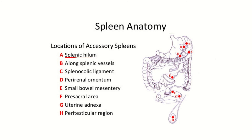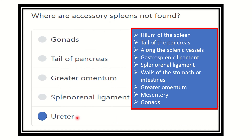The accessory spleen may be present at the splenic hilum, along the splenic vessels, and in the splenocolic ligament where the spleen is attached to the colon at the left flexure. It may also be found in the perirenal fat, small bowel mesentery, parasacral area, and peritesticular region.